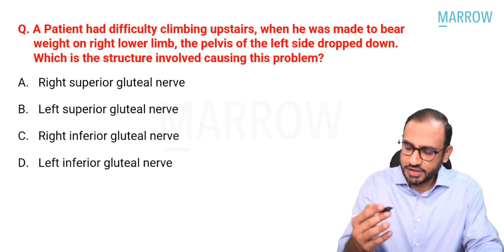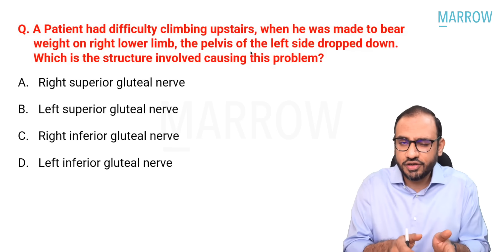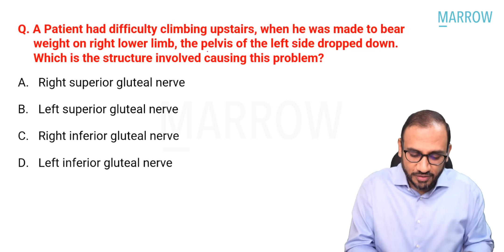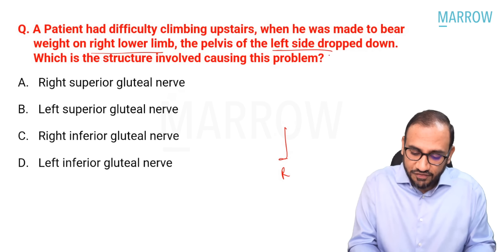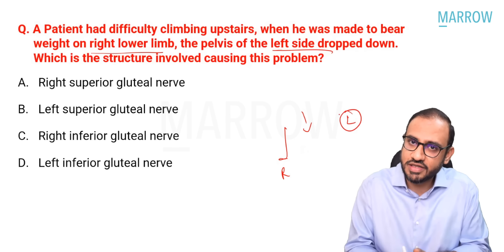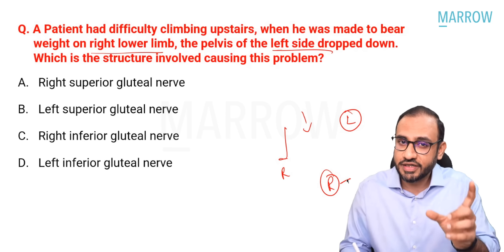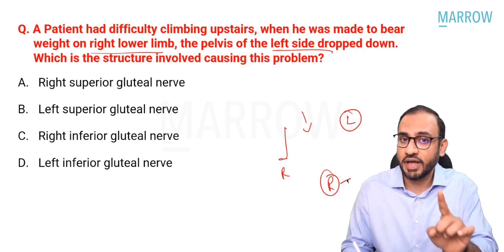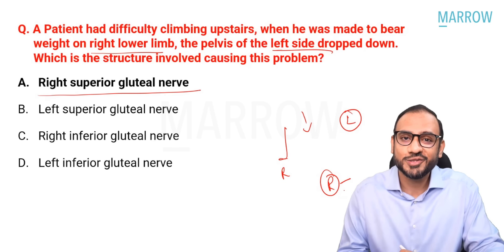Question four: A patient had difficulty climbing upstairs. When made to bear weight on the right lower limb, the pelvis of the left side dropped down. This is a Trendelenburg test question. The left side is the sound/healthy side that is sinking. The right side is the pathological side. The components of the Trendelenburg unit are the abductors (gluteus medius and minimus) and the nerve supplying them — the superior gluteal nerve. The correct answer is right superior gluteal nerve.